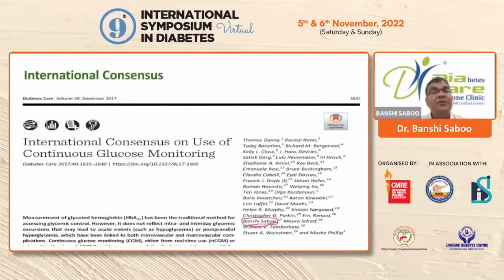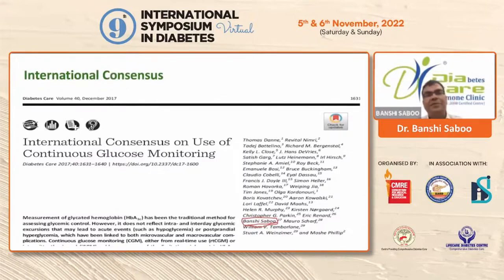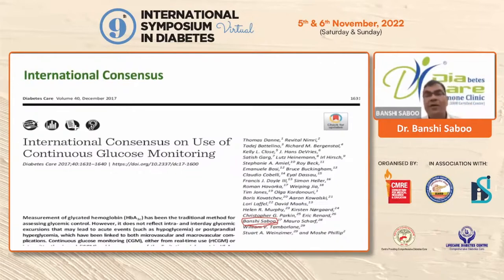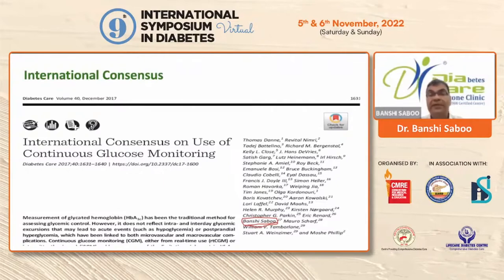There was an international consensus on use of continuous glucose monitoring in 2017, and I was part of this consensus. We agreed that for all type 1 diabetic patients, if possible, they should be using continuous glucose monitoring. The consensus also recommended CGM for persons with hyperglycemia in pregnancy, elderly type 2 diabetic patients on insulin, those at risk of hypoglycemia, those with established cardiovascular disease, and persons with hypoglycemia unawareness.